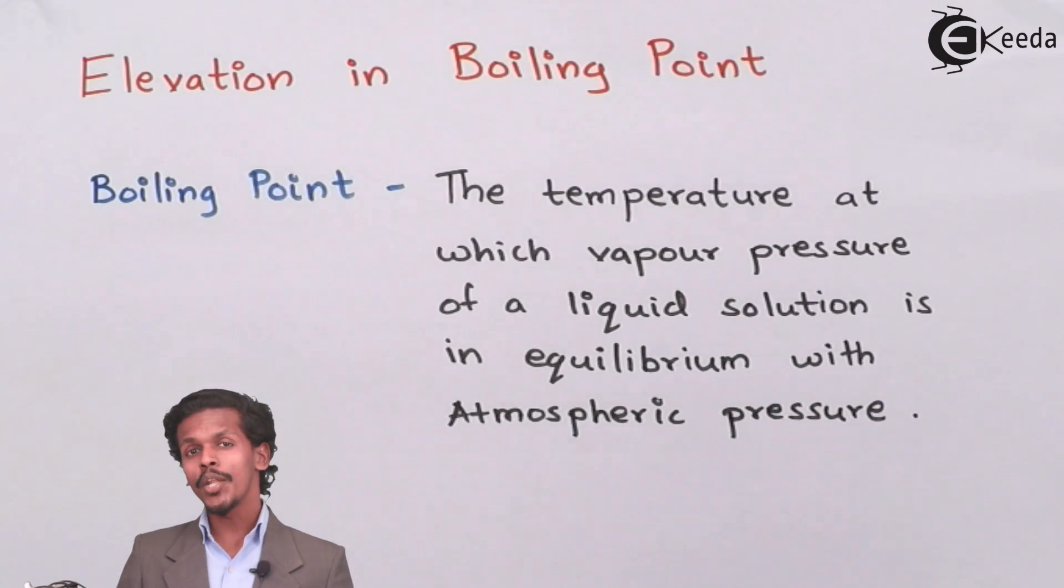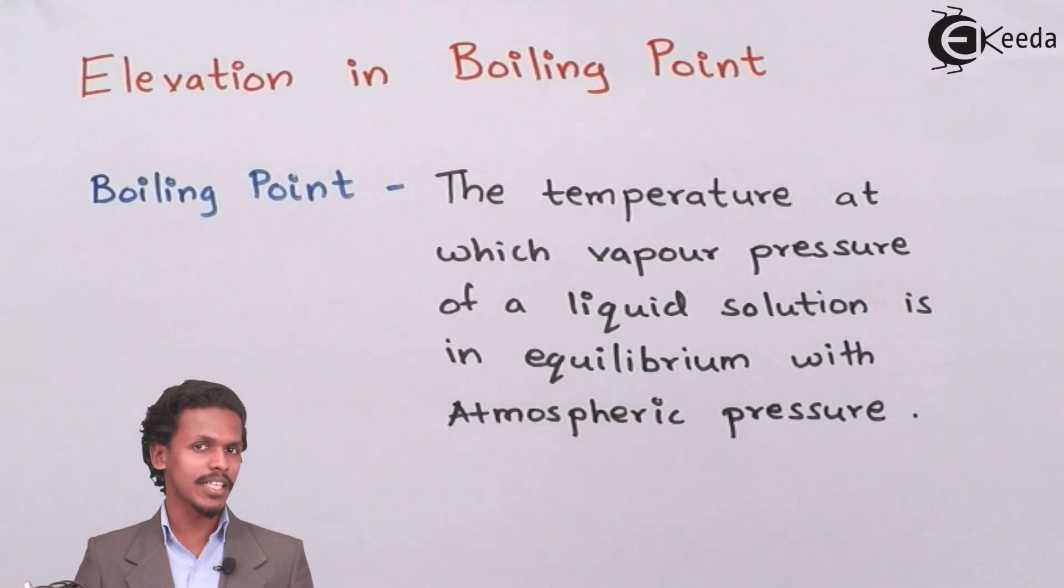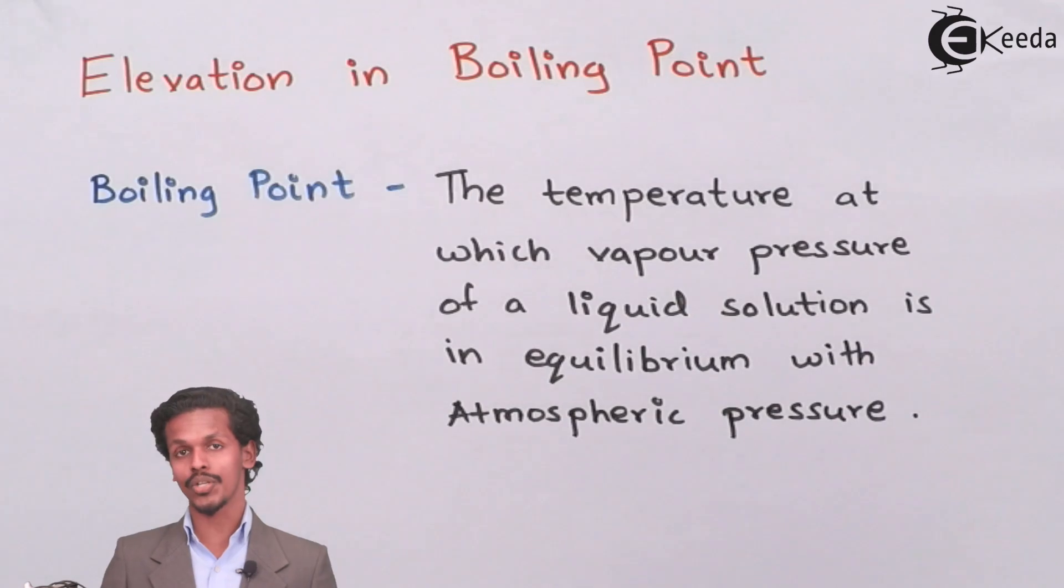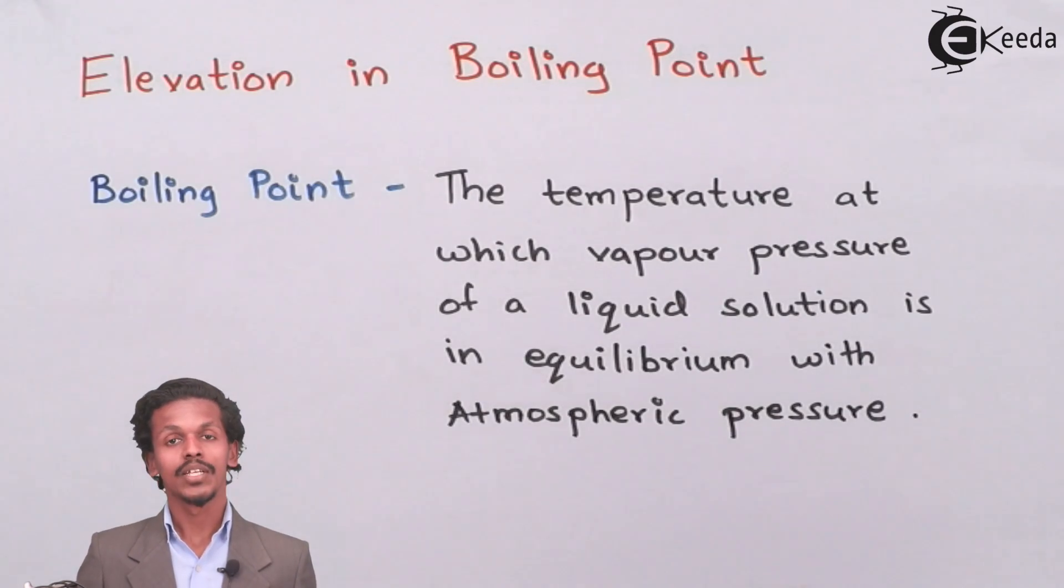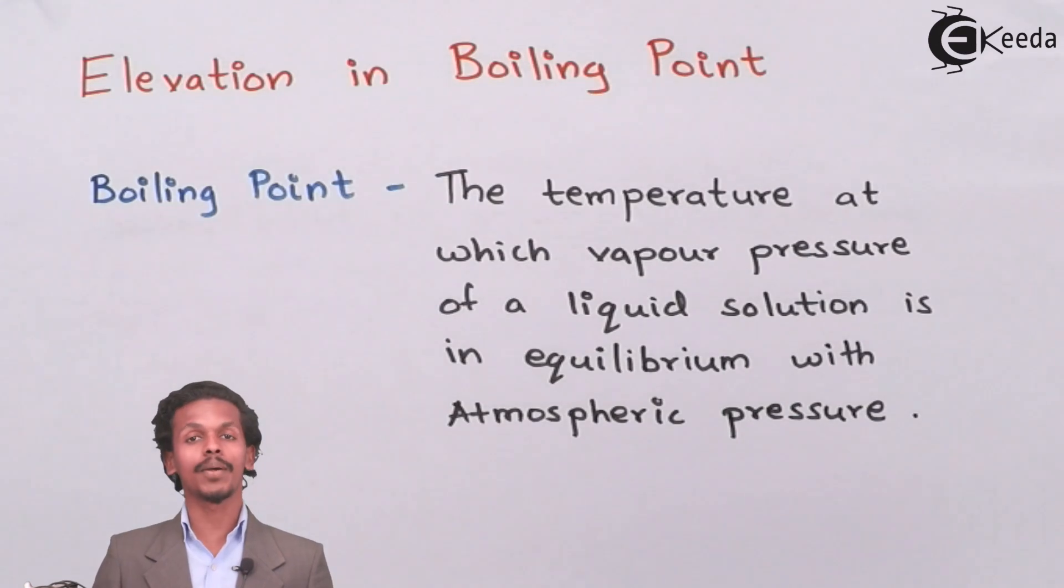I hope the concept of boiling point is clear to you now. For example, water has a boiling point of hundred degrees Celsius, which means at hundred degrees Celsius we are converting the vapor pressure of the liquid into one atmospheric pressure. Every liquid has its own boiling point. Now let us see what is elevation in boiling point.